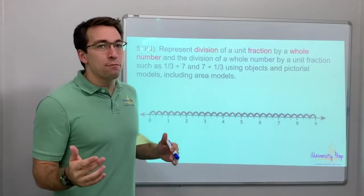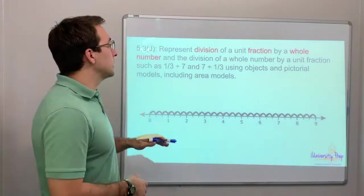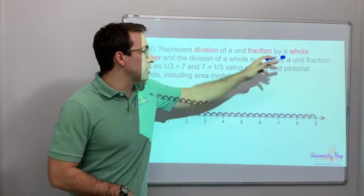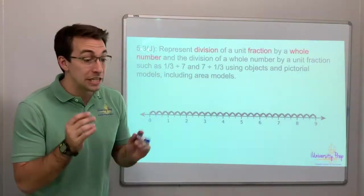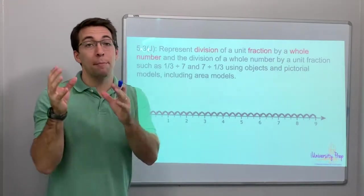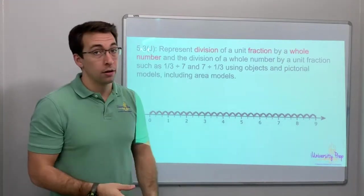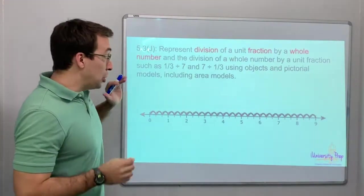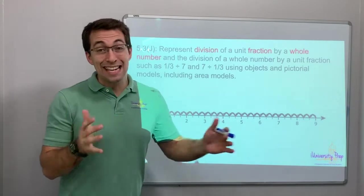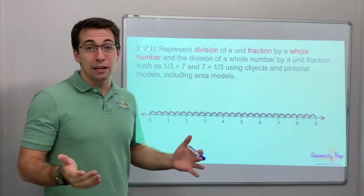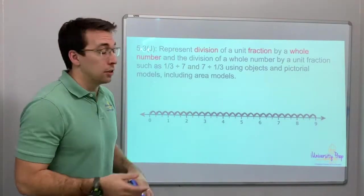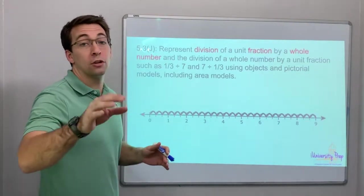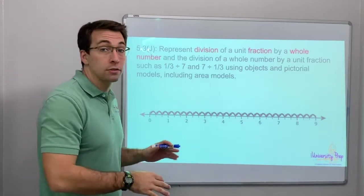So the TEKS 5.3J is about division of a unit fraction by a whole number — division of a fraction by a whole number using pictorial models. This, again, can be kind of confusing. So this is similar to the multiplication of a fraction by a whole number using models.